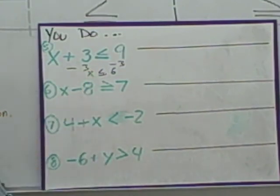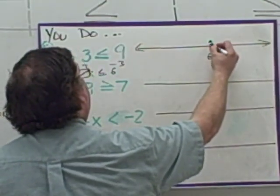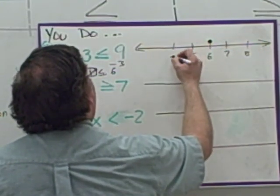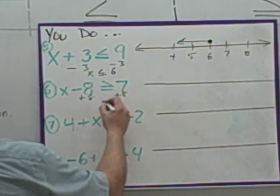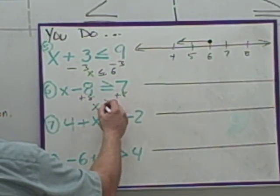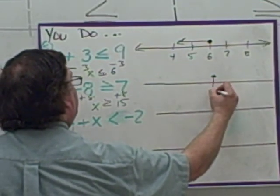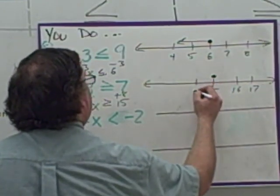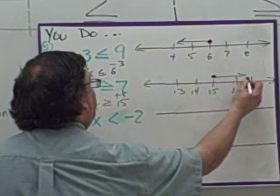There's never any need to flip the inequality when working with addition or subtraction. Closed circle because it's an or equal to, going in the less-than direction — seven, eight on one side, five, four on the other. Next: adding eight to both sides because we have a minus eight. We get x is greater than or equal to fifteen. Filled-in circle, middle of the number line is fifteen — sixteen, seventeen one way; fourteen, thirteen the other. Closed circle, greater than or equal to, going in that direction.